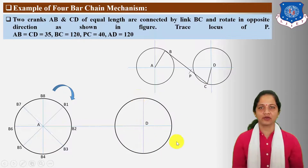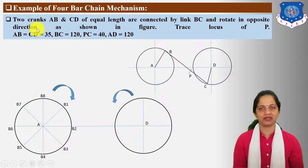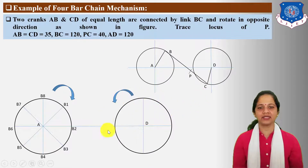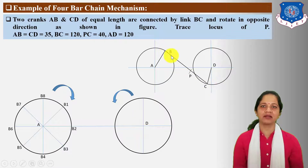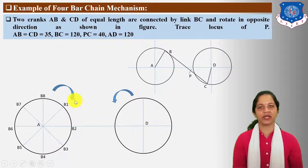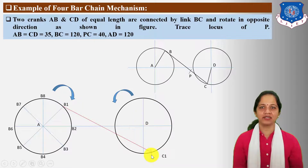The direction of rotation of crank CD is anticlockwise because cranks AB and CD rotate in opposite directions. Next, find out the positions C1 to C8 on this circle corresponding to the uniform positions B1 to B8 of crank AB. These two cranks are connected by connecting rod BC and the length of connecting rod BC is given as 120 mm. Take radius 12 cm, center B1, and cut arc on this circle.